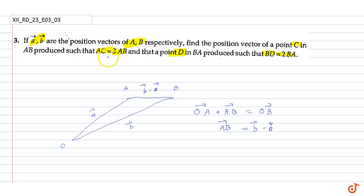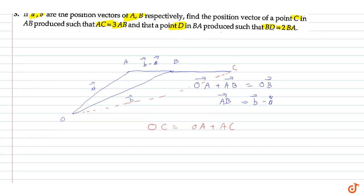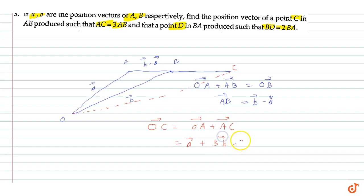For point C, AC is equal to 3AB vector. Let's say this point is C. So OC is equal to OA plus AC, which equals A vector plus 3 times of (B minus A) vector.